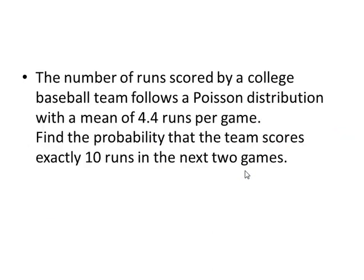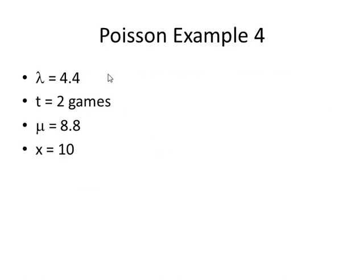The number of runs scored by a college baseball team follows a Poisson distribution with a mean of 4.4 runs per game. Lambda is 4.4 per game. Find the probability that the team scores exactly 10 runs in the next two games. That means that t is 2. And we're looking for x to be exactly 10 runs. x equals 10. Now, because t is a value that's different than 1, mu will equal lambda times t. And that's where the 8.8 comes from. Think of it this way. If they average 4.4 runs per game, then in two games they should average twice that amount or 8.8.